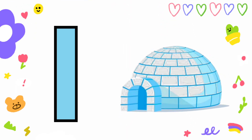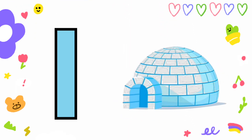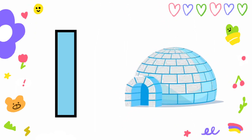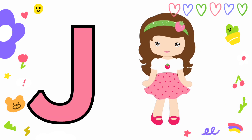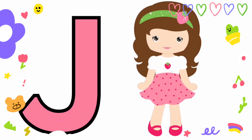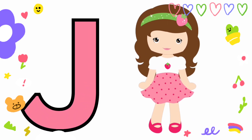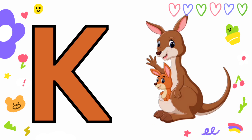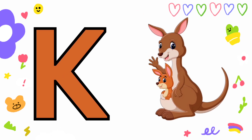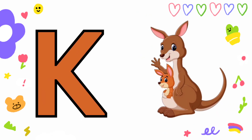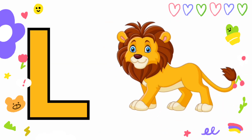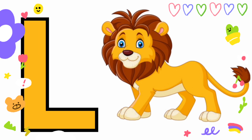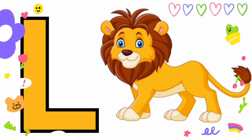I is for Igloo, I-I-Igloo. J is for Jump, J-J-Jump. K is for Kangaroo, K-K-Kangaroo. L is for Lion, L-L-Lion.